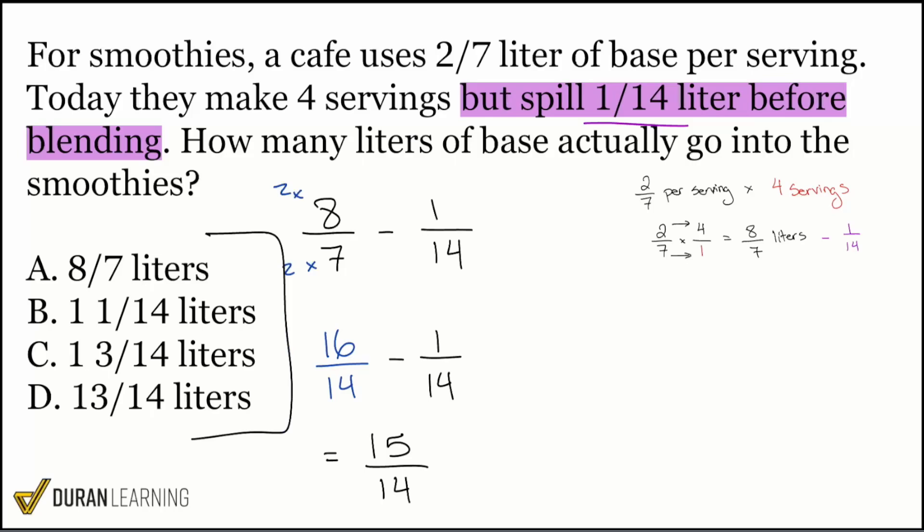And notice how this is not in the answer choices, but we can easily rectify that by going ahead and converting this improper fraction into a mixed number. One way to think about it is everybody, how many times does 14 go into 15? That's going to be one whole time. And we'll take away the 14 from the 15. How much do we have remaining? One, exactly. 15 minus 14 is a remaining one out of 14. And there we are. The true correct answer will be one and one 14th. And there it is, my party people. And we are good.